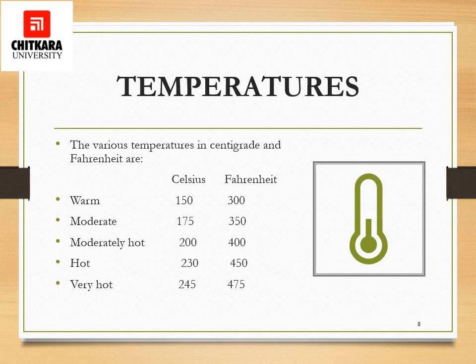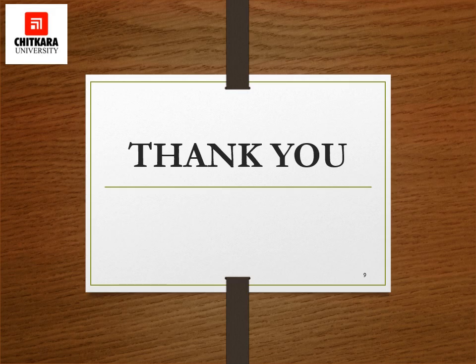For the newer ovens, warm temperature is approximately 150 degrees Celsius or 300 degrees Fahrenheit. Moderately warm is 175 degrees Celsius, moderately hot is 200 degrees Celsius, hot is 230 degrees Celsius, and very hot is 245 degrees Celsius. So when a recipe uses terms like warm, moderate, moderately hot, hot, or very hot, these are the corresponding temperatures you can set on your oven.